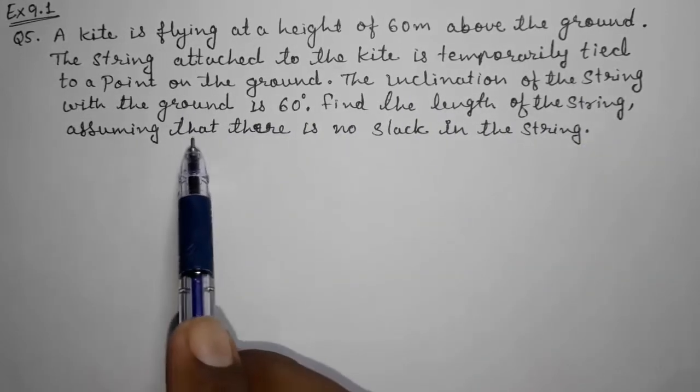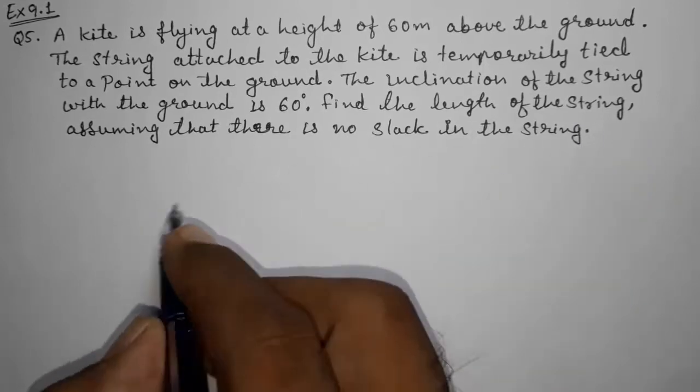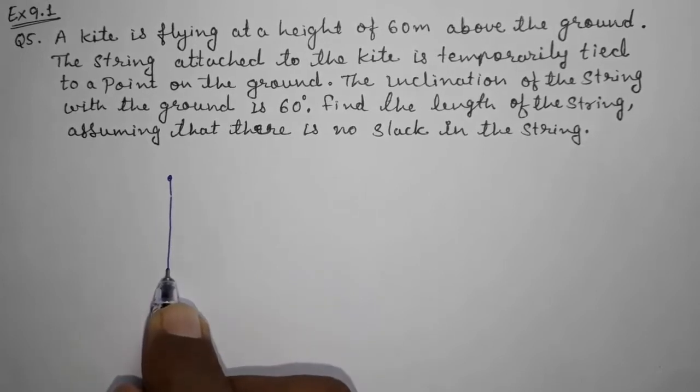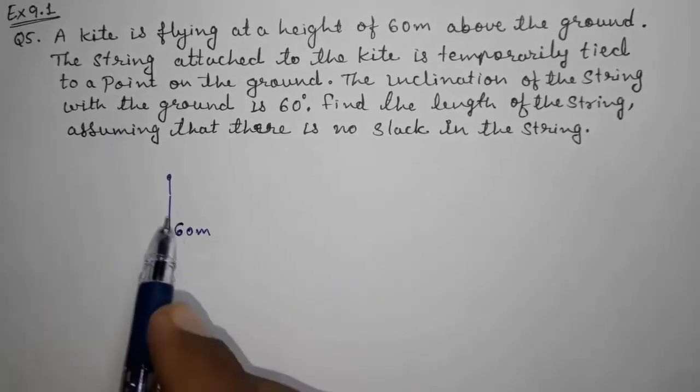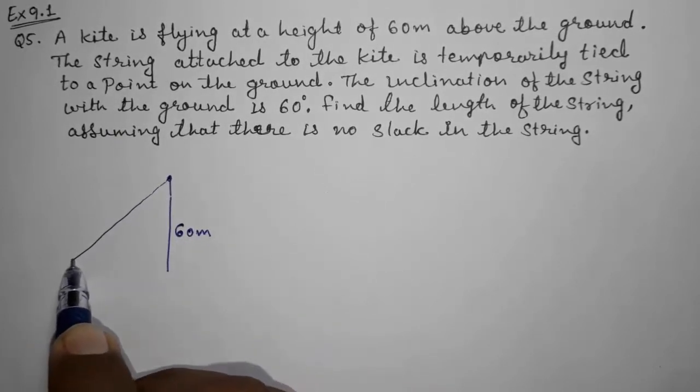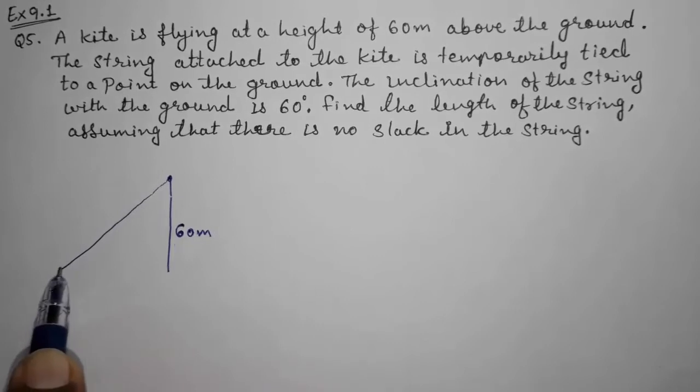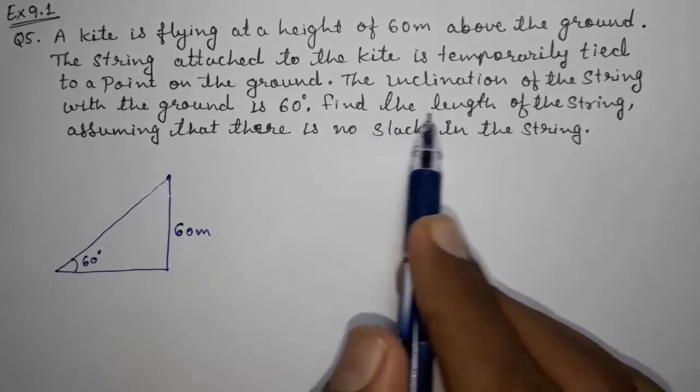So they are telling a kite is flying at a height of 60 meters from the ground. The string is here, and here is the kite. The string is attached and is making 60 degrees with the ground. So find the length of the string - this we have to find out.